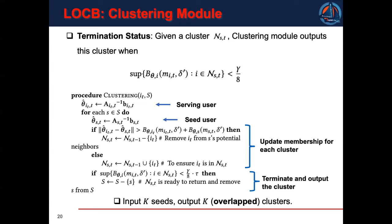To sum up, the workflow of the clustering module can be described as the following. In each round, we compute the estimation of the serving user and the seed users. We compare the serving user with each seed user. Then, we update the membership for each seed cluster. Last, we output a cluster when it satisfies the termination condition. Notice that we input k seeds and the clustering module outputs k clusters that allow for overlapping.